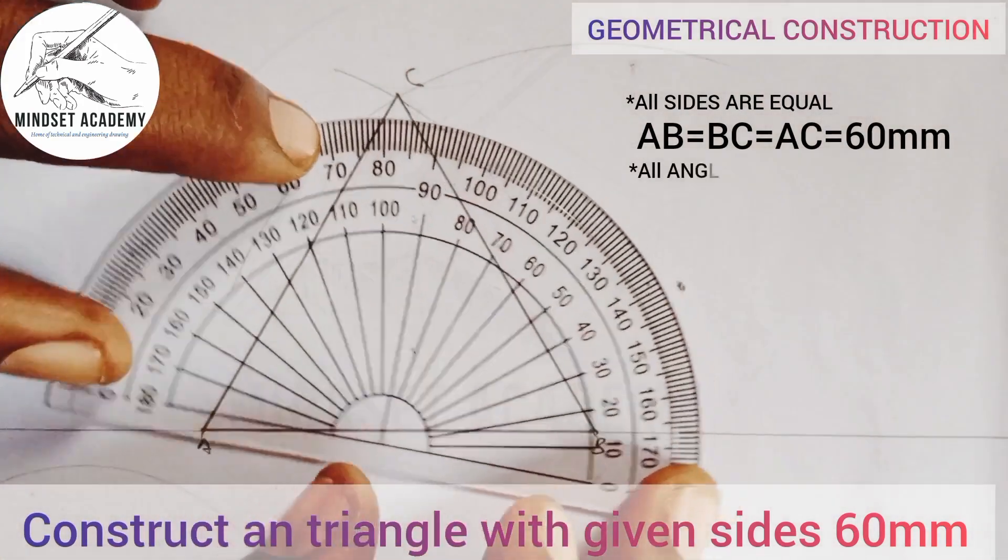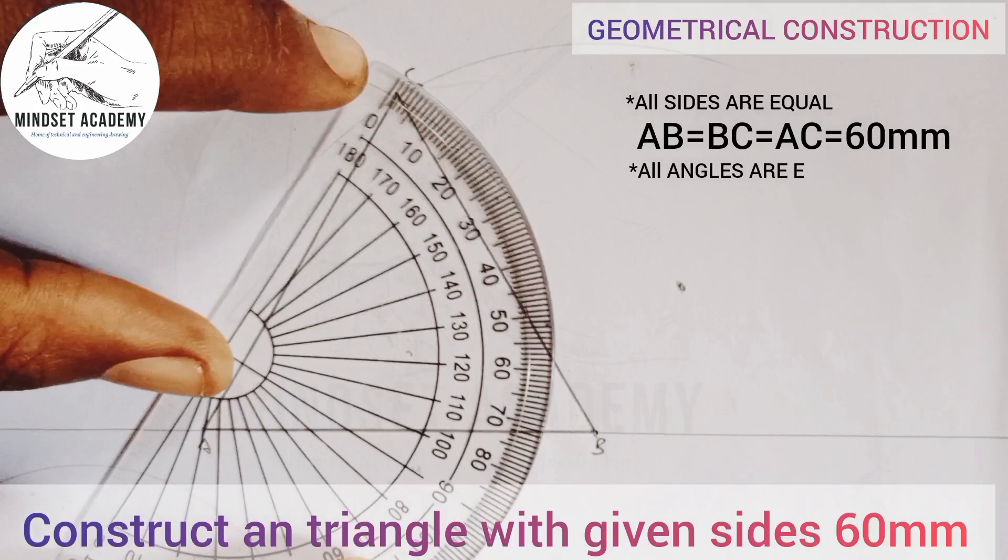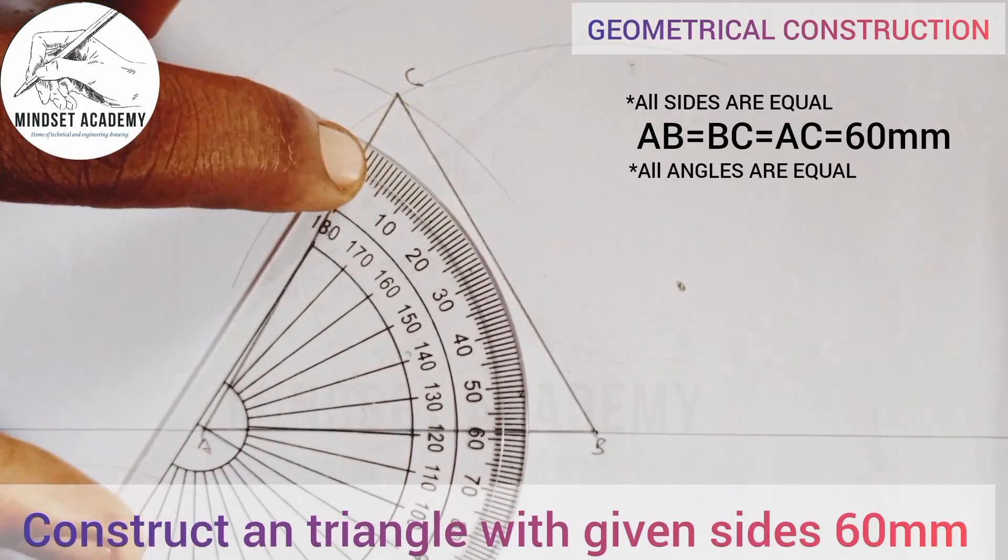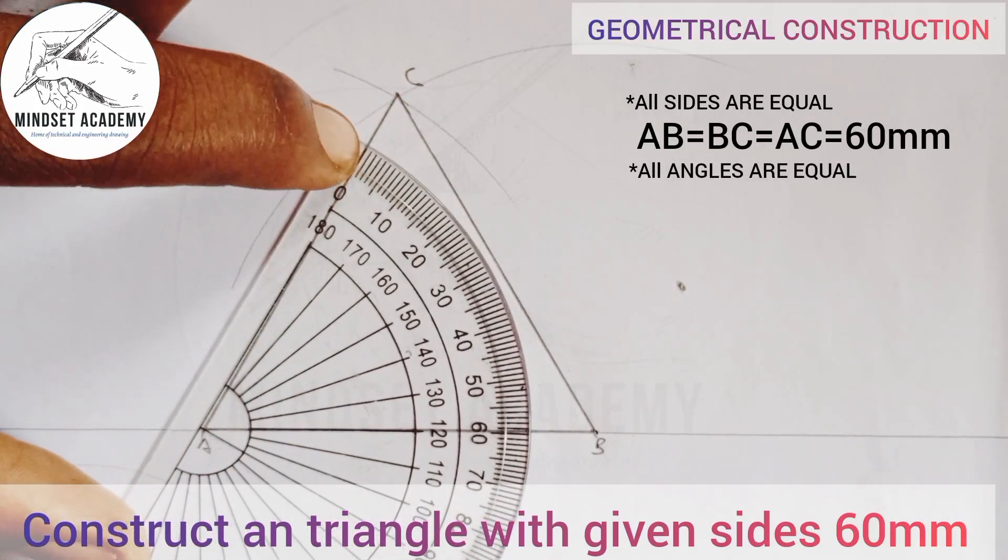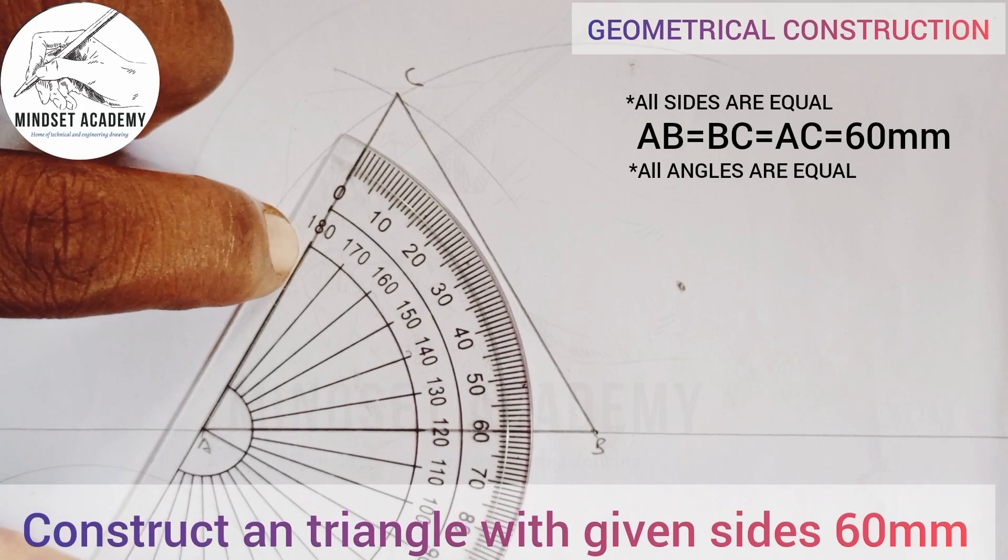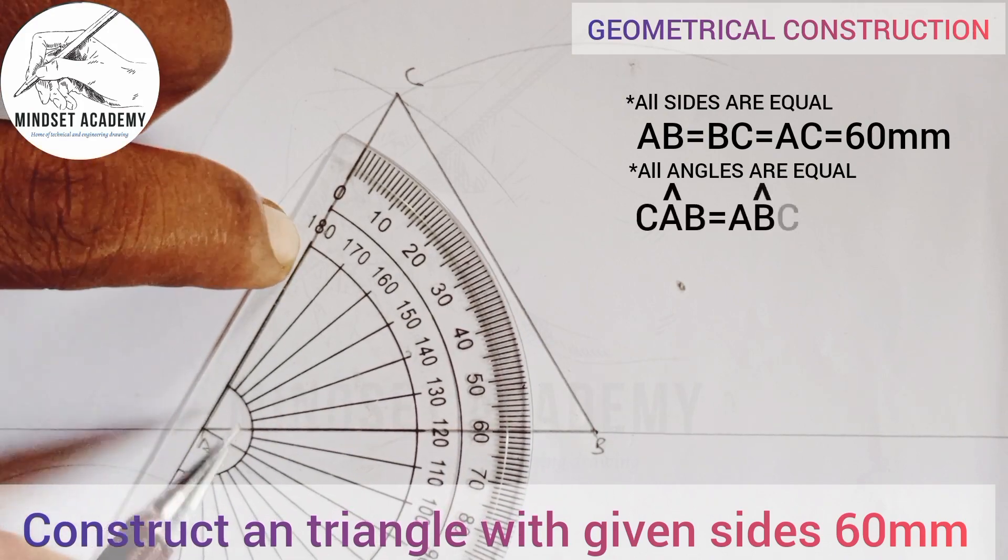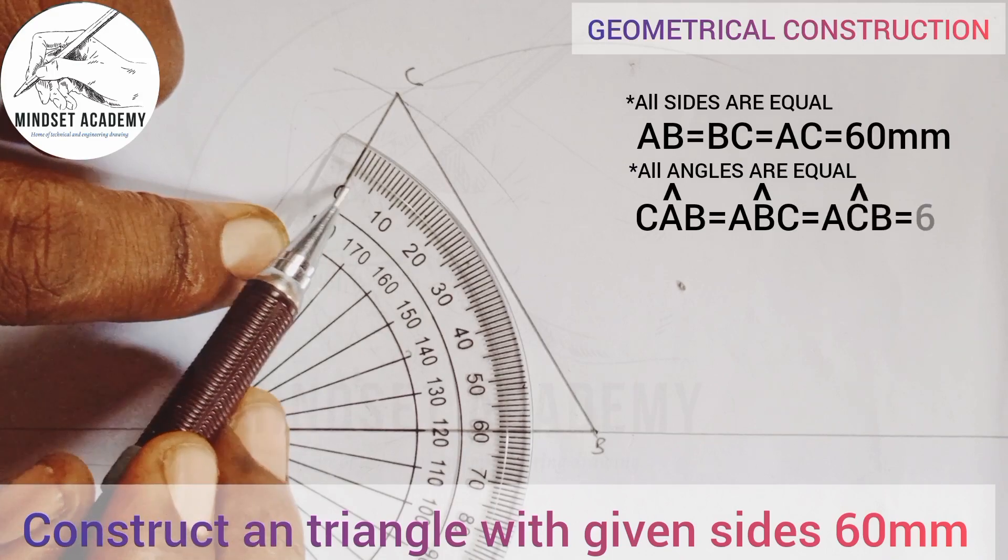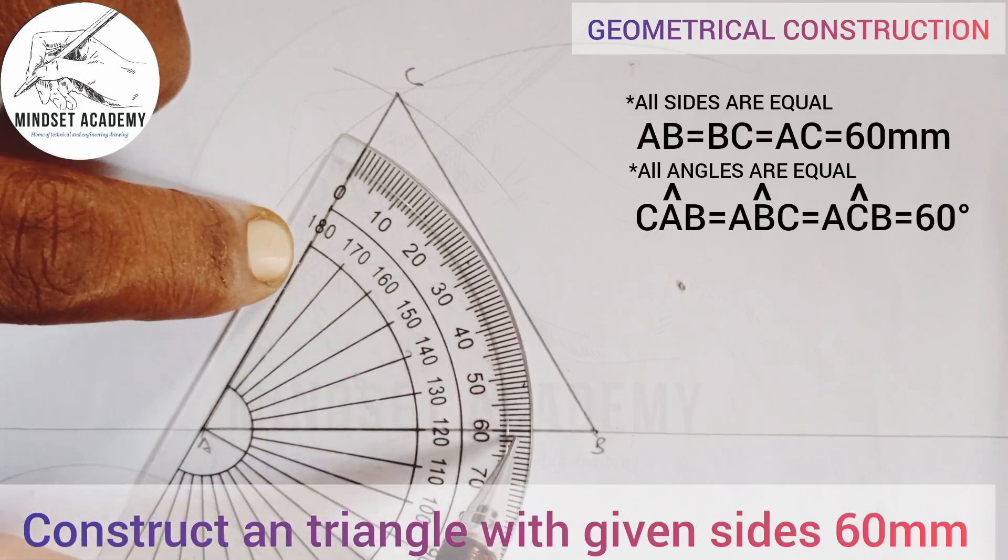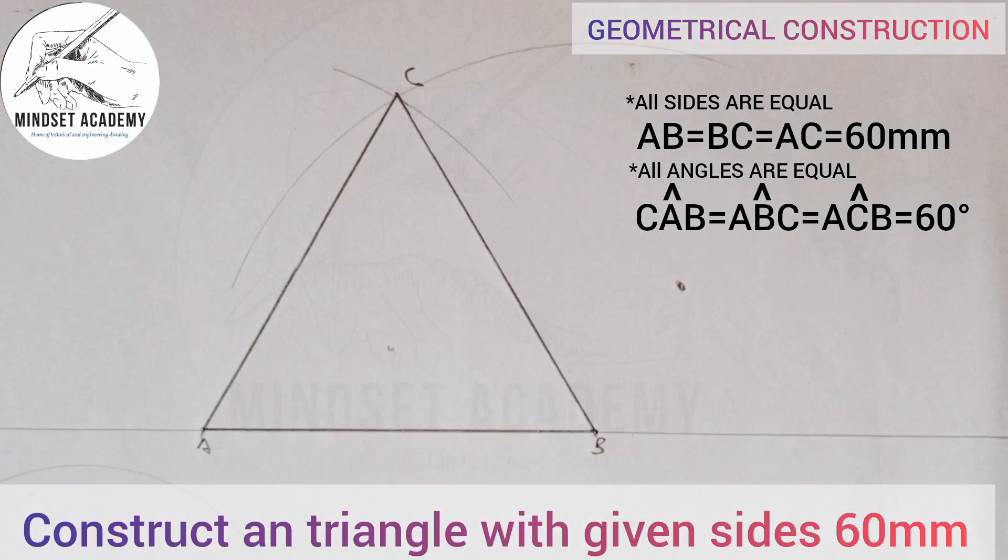Similarly the angles are also equal. So if I take my angle this way, I place it from 0 here. Now my point is meeting at point B and this is my line zero. If you look at it, zero, we are moving to this point here, this is 60. So it means that the angle from this point to this point here is 60 degrees.